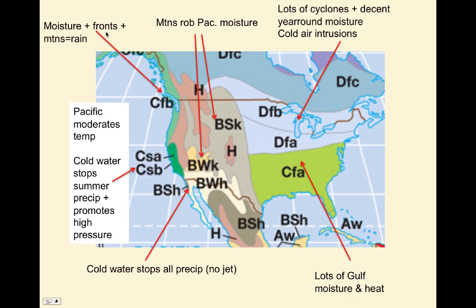Looking at the Pacific Northwest, the C means mild relatively all year, f means wet all year over the course of the year, and B means a relatively warm but not hot summer. The mechanism here is that they have moisture coming in from the Pacific all the time, fronts that can converge that moisture and force precipitation, and mountains that can orographically create rainfall. So they're typically wet all throughout the year. As a result of the moderating effects of the ocean, their temperature is also pretty consistent over time.